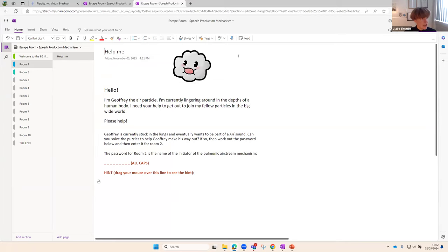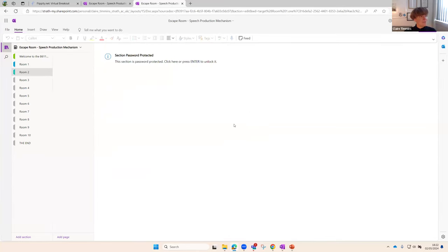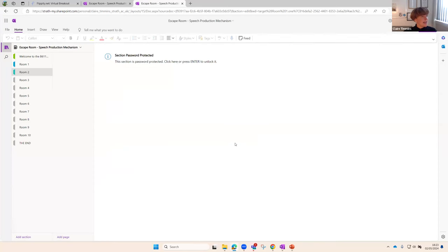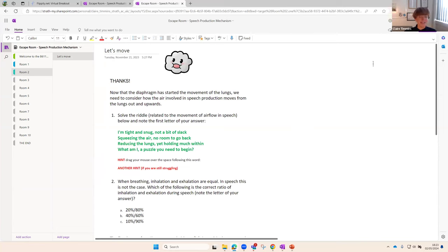So each page when the students got to it would have Jeffrey at the top and a bit of blurb to give you the context of where we are in Jeffrey's journey. So currently he's lingering around the depths of the human body, he's stuck in the lungs and he really wants to be a part of this. We're going to have to help him out. The first one here is a straightforward question based on some of the teaching content: what is the initiator of the pulmonic air stream mechanism? You can drag your mouse over the line and it's white text and it will tell them what it is. So the answer to this is the diaphragm. Click in here and here we get again Jeffrey responds thanks very much.